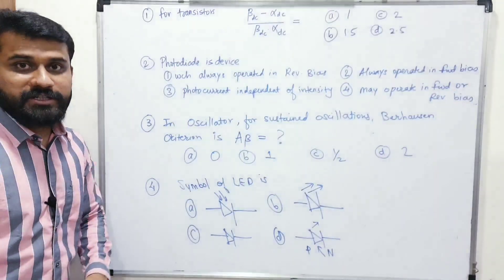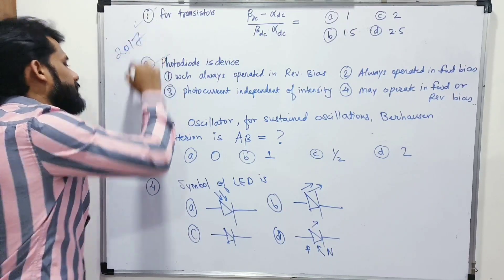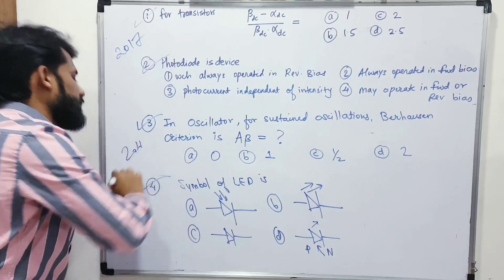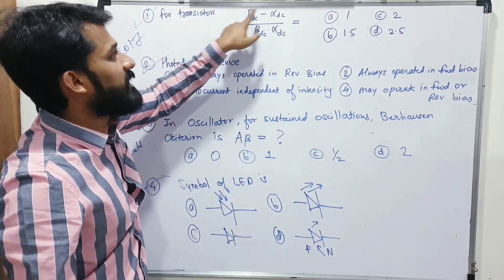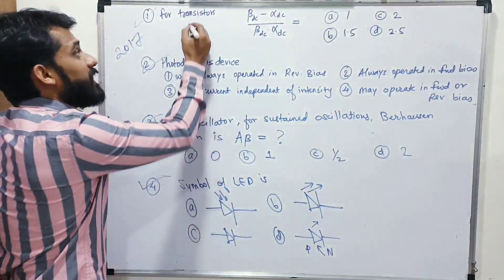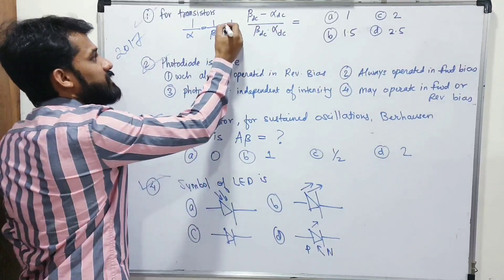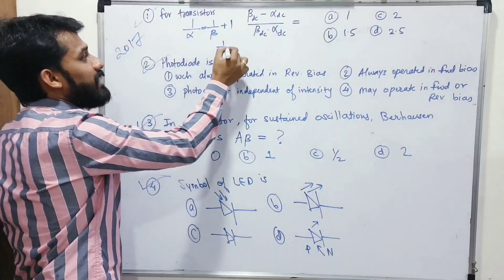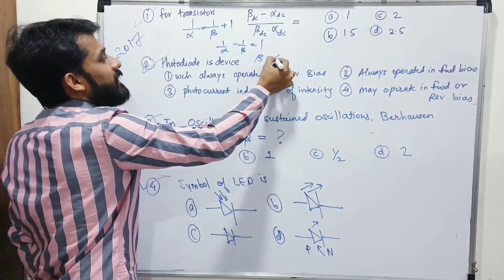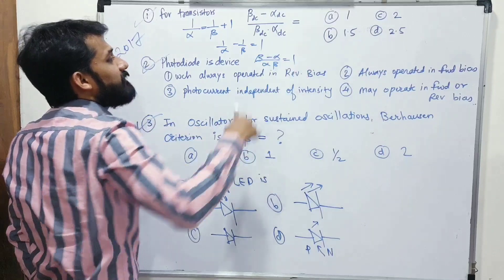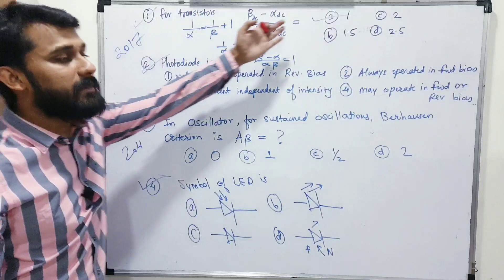Questions from 2017 CET: first question asks for the value of (beta - alpha)/(beta × alpha). From the relation 1/alpha = 1/beta + 1, rearranging: 1/alpha - 1/beta = 1, which means (beta - alpha)/(beta × alpha) = 1. So the answer is 1. This is a simple formula-based question derivable from the alpha-beta relationship.